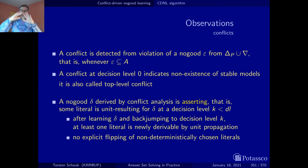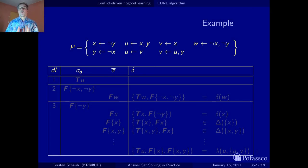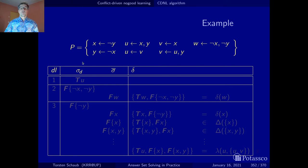Now there was a lot of hand-waving at the beginning, then a very detailed algorithm, then some observations. Let's finally look at an example. I'll use our algorithm to compute a stable model of this logic program here, which I give mainly for reference and sanity checks. I will mainly concentrate on the resulting no-goods. To trace the algorithm, I have a table: one column for the decision level, two columns for the current assignment — on the left the decision literal, on the right the propagated implied literals — and with each propagated literal, the corresponding no-good responsible for its derivation.